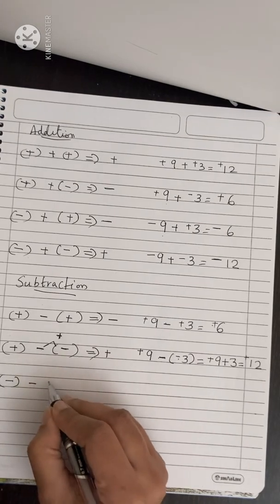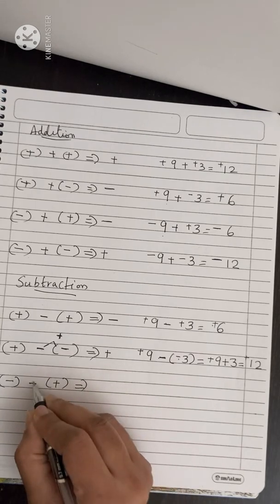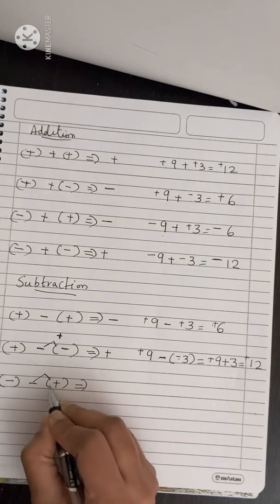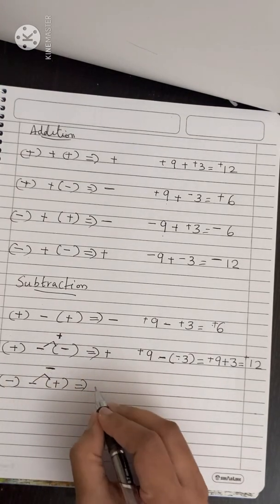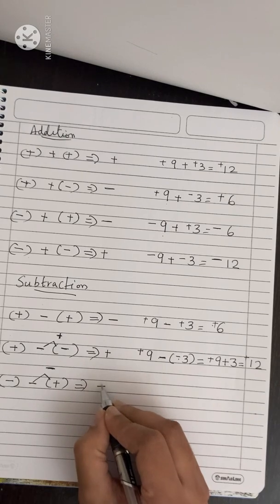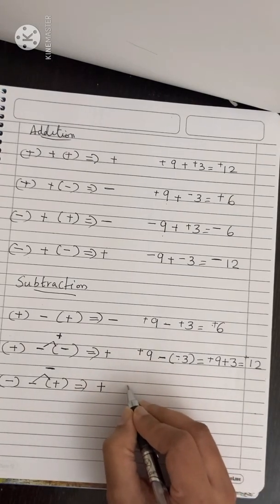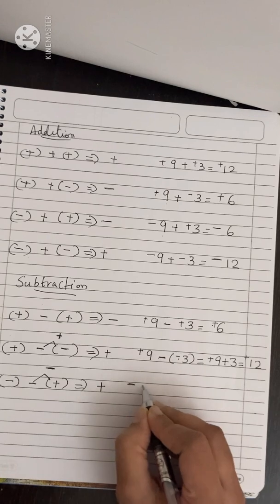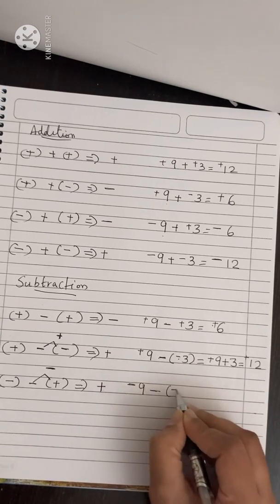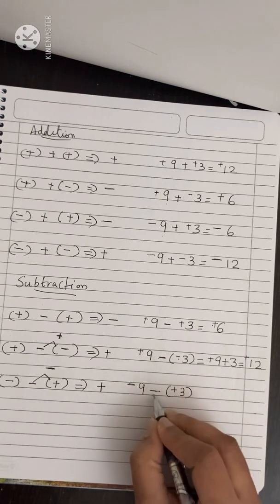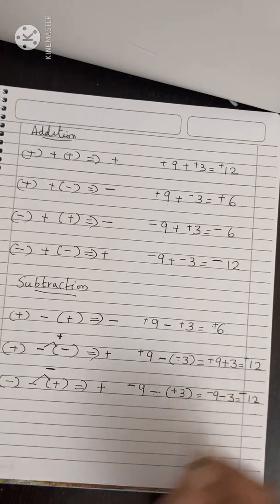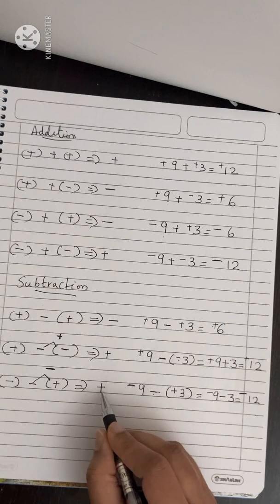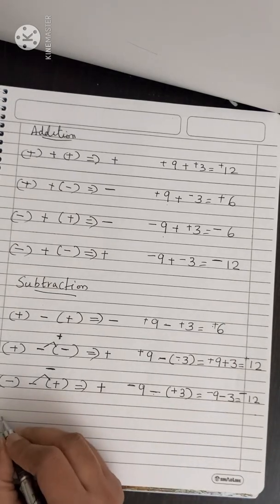Minus minus plus — here minus into plus gives you minus, so you get minus minus, and you have to add them. For example, minus 9 minus plus 3 becomes minus 9 minus 3. You add the digits and put the minus sign.